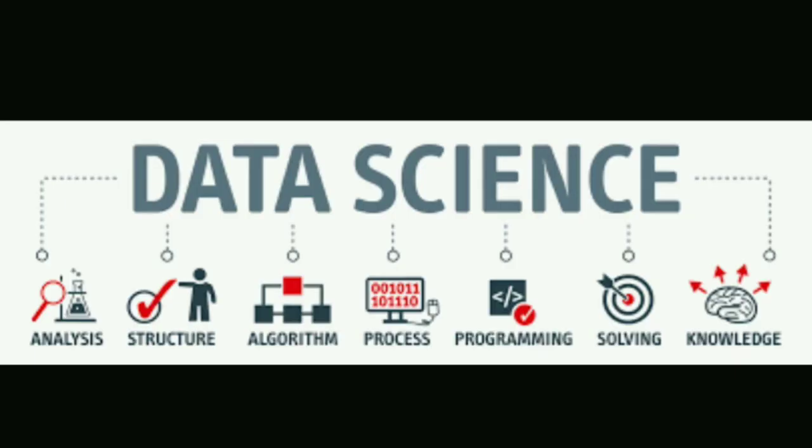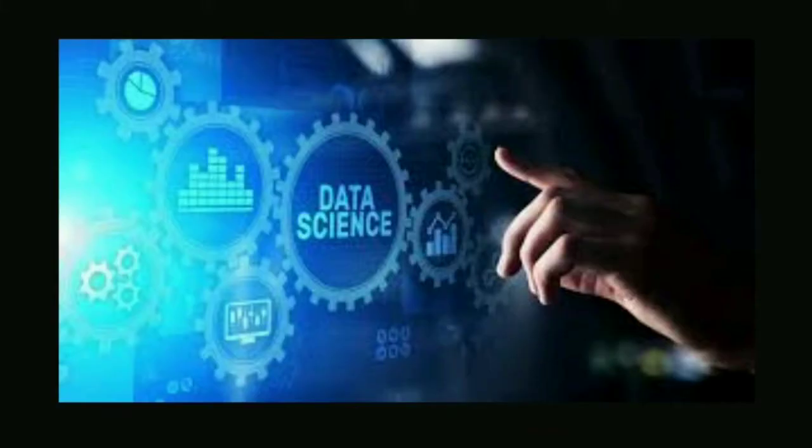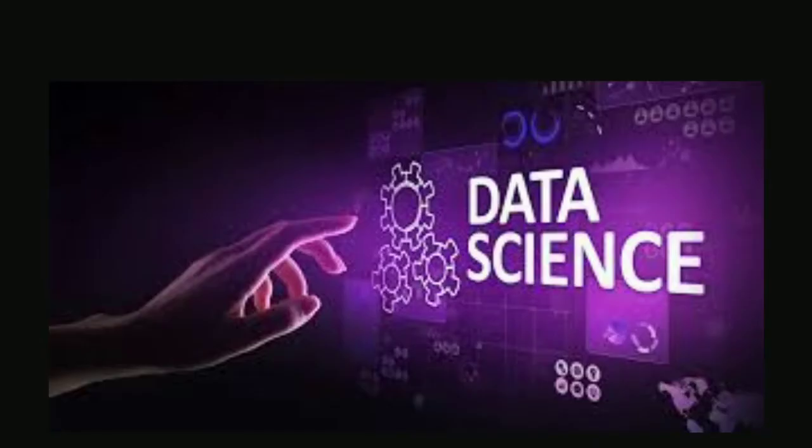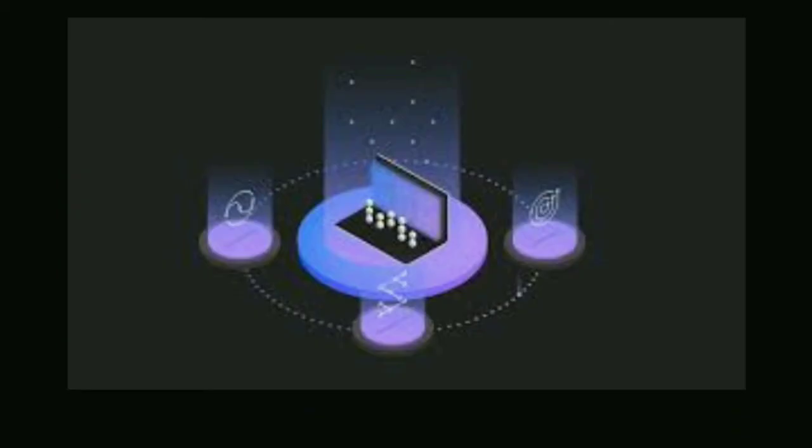So what does a data scientist do? A data scientist combines computer science, modeling, statistics, analytics, and mathematical skills along with sound business sense to help organizations solve vexing problems and take better objective decisions. So basically, in this field, we combine domain expertise, programming skills, and knowledge of mathematics as well as statistics to extract meaningful insights from data.